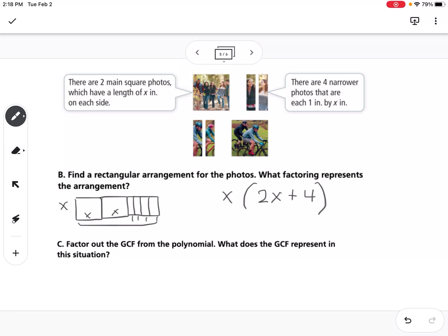And then it says to factor out the GCF. So here we have 2x squared plus 4x. This would be 2 and 2 x's.